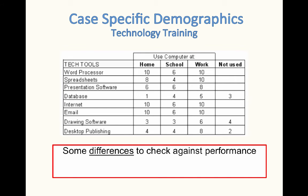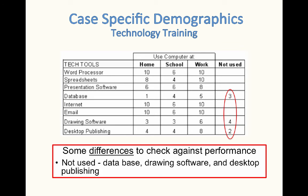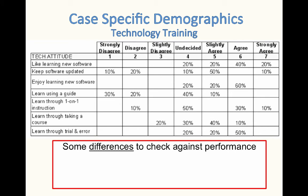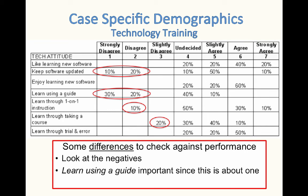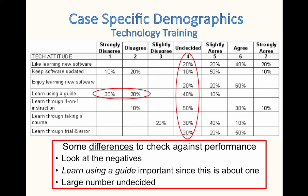Here are more differences to check. This is a list of technology tools that people use at school or work, but particularly important is what's not used — those are database, drawing software, and desktop publishing. That may make a difference in those individuals' performance. Also looking at attitudes and the negatives: keep software updated, learn through one-on-one instruction, and learn through taking a course. All of these sound important, especially learn through one-on-one instruction. Even more important is learning using a guide, since this is about creating a guide. Look at the number of people that are undecided — that may well make a difference. You should check those individuals to see how they performed.